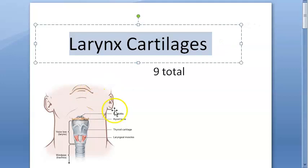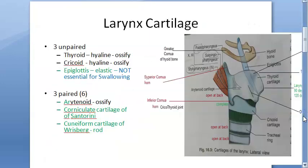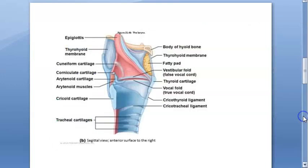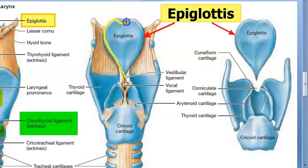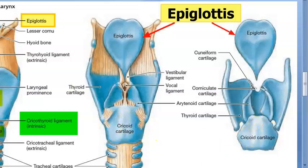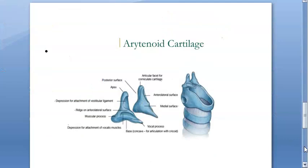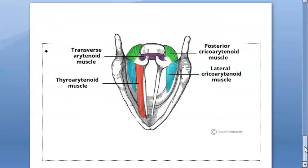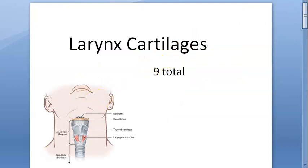To summarize: the larynx has nine cartilages — three unpaired and three paired. We looked at the pre-epiglottic space, the leaf-shaped posterior surface of the epiglottis, the cricoid cartilage as a complete ring with a posterior lamina, and the arytenoid cartilage with its processes and muscle and vocal fold attachments.